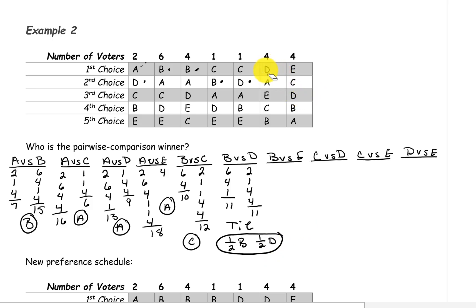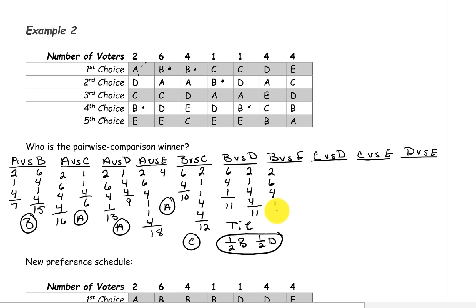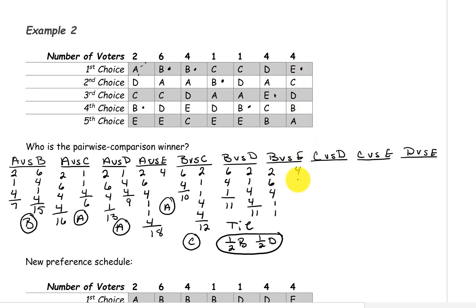Next we want to compare B versus E. On the first two ballots, B is above E, and on the next six, and also on the next four, and on the next one, and on the next one as well. On this four, E is above B, and also on the last four, E is above B. So B has a total of 14 and E has a total of eight, so B is the winner of this pairing.